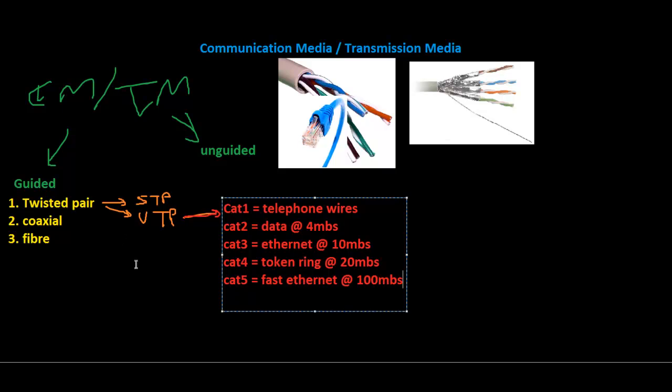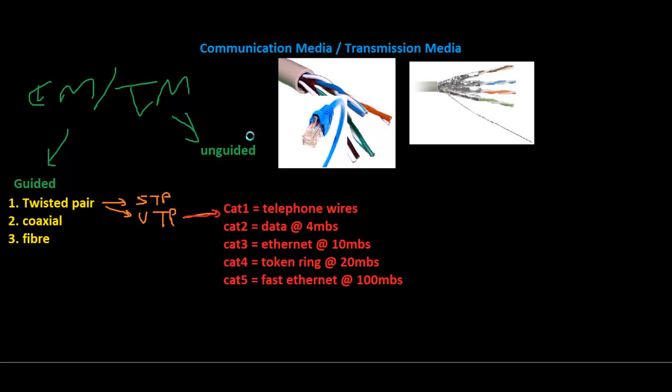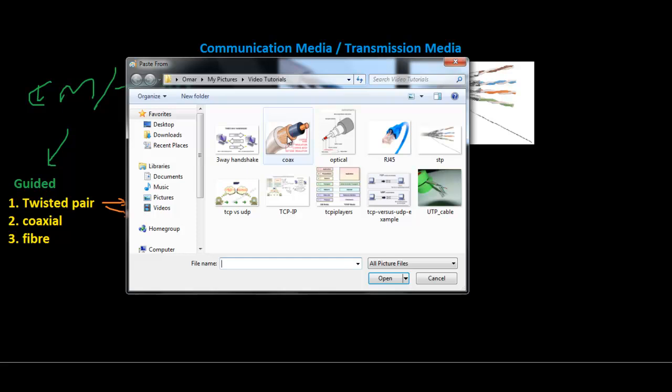Next guided media is the coaxial cable. Let me show you an example. I think we're all familiar with coaxial cable. This is how it looks. The coaxial cable has a central conductor, normally copper. It's surrounded by an insulated material, normally called a dielectric material, which is then surrounded by a copper mesh. Everything is encased in an outside insulation material.